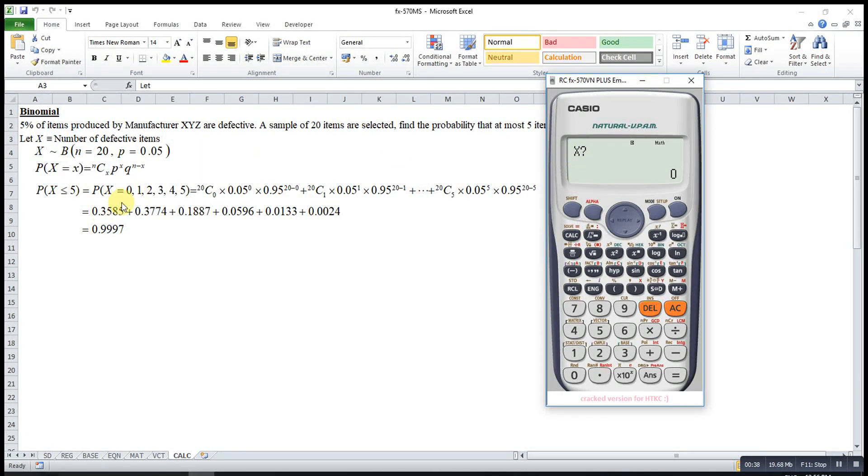We calculate when X equal to 0, then equal. So this one will be the probability when X equal to 0. Then we press another. X equal to 1.